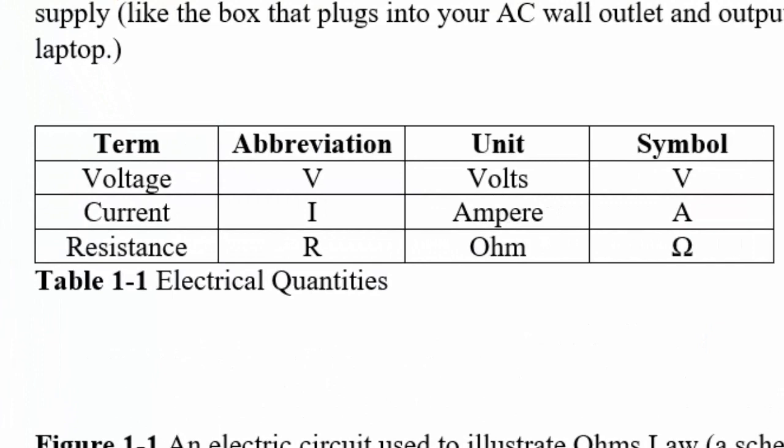The three terms used in Ohm's law are voltage, current, and resistance. Voltage abbreviation is capital V, the unit is volts, and the symbol is capital V. Current abbreviation is I, the unit is the ampere, also milliamps which is one one-thousandth of an amp, and the symbol is capital A.